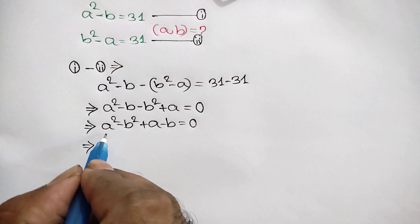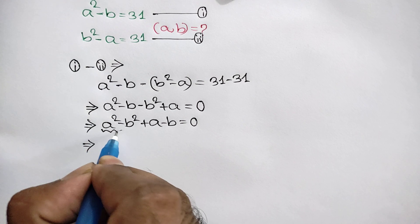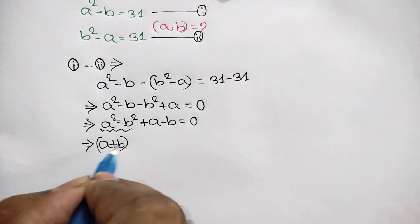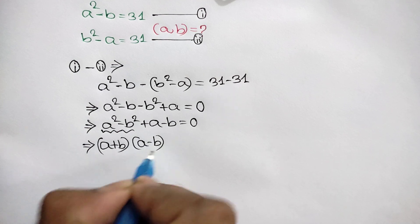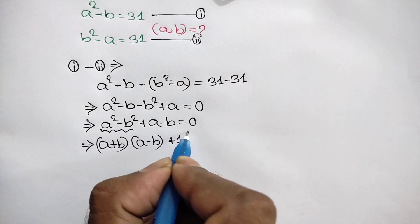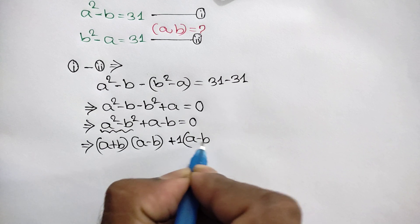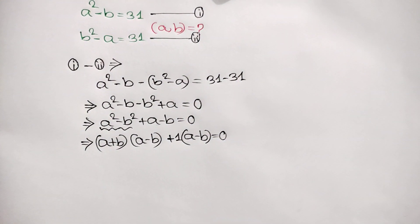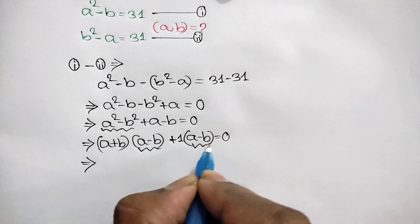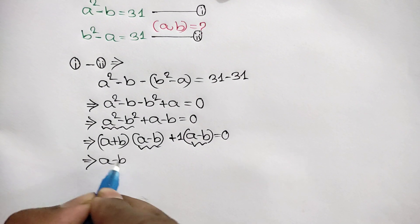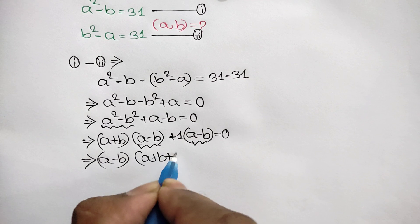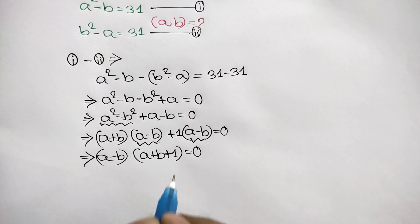Now we can use the difference of squares formula, so we write (A plus B)(A minus B), and taking out a common factor of positive 1 from the last two terms we get plus 1 times (A minus B), which equals 0.